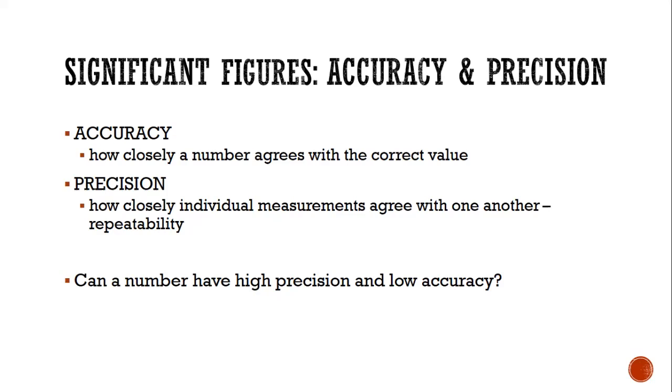If, on the other hand, another group goes over and they write down 30.1, their answers are all also very close together. That is also precision. But let's pretend that the actual amount of water in that graduated cylinder was 3.2. Both sets of measurements are very precise, but both sets of measurements are not very accurate. The first groups would be more accurate than the second.